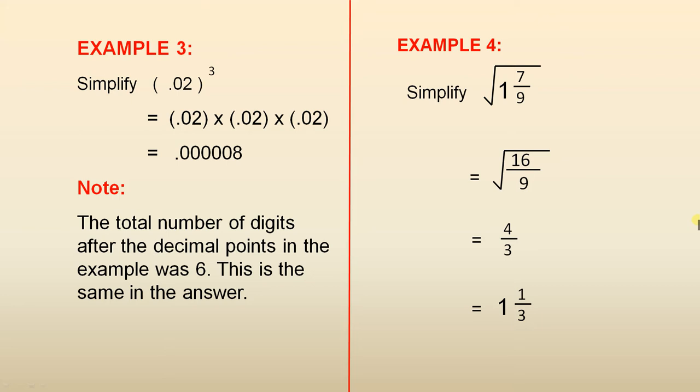Example 3: 0.02 all cubed. 0.02 by 0.02 by 0.02. And the answer is 0.000008. Note, the total number of digits after the decimal points in the example was 6: 2, 4, 6. This is the same in the answer. You can see here, there are 6 digits after the decimal point.